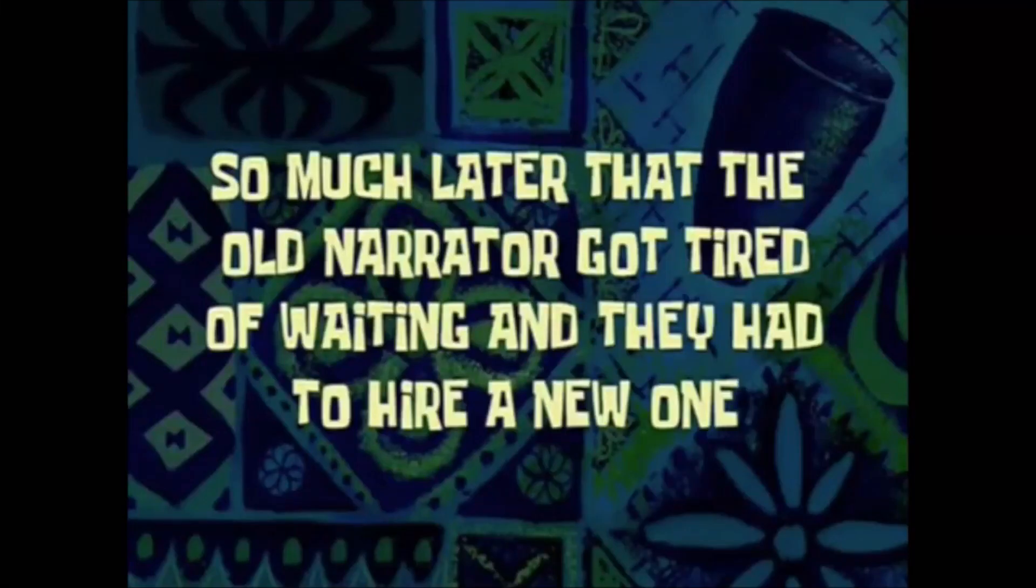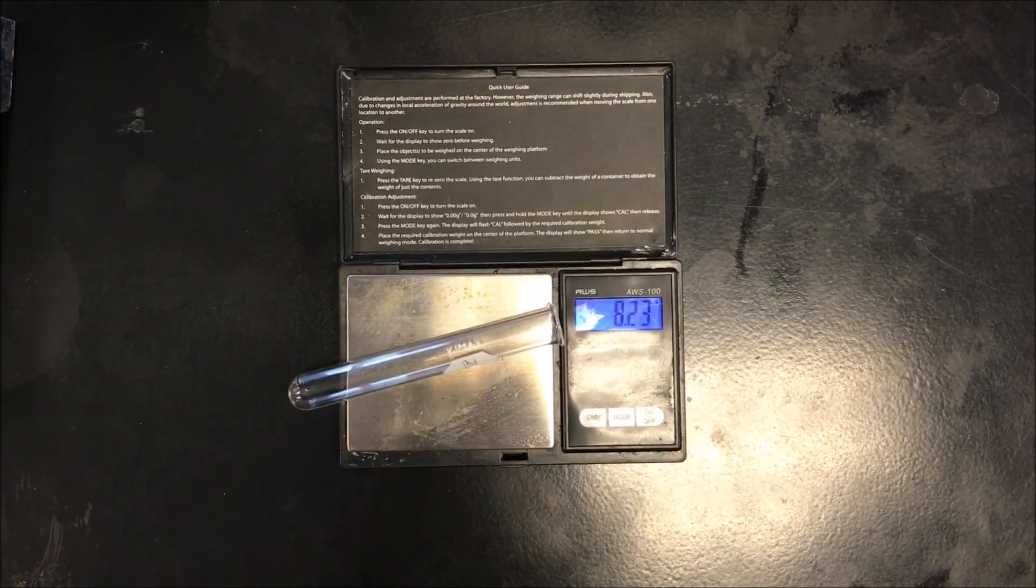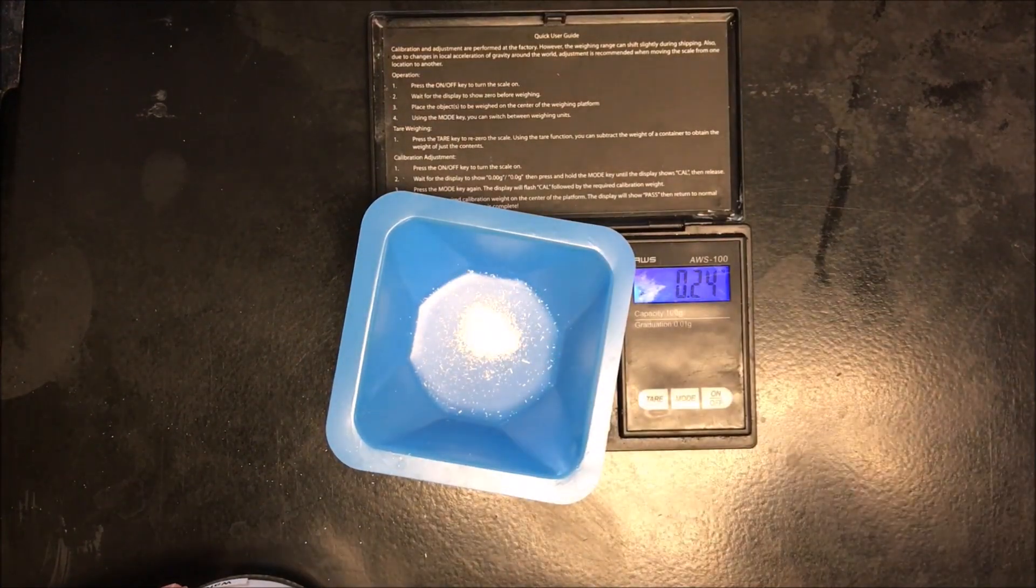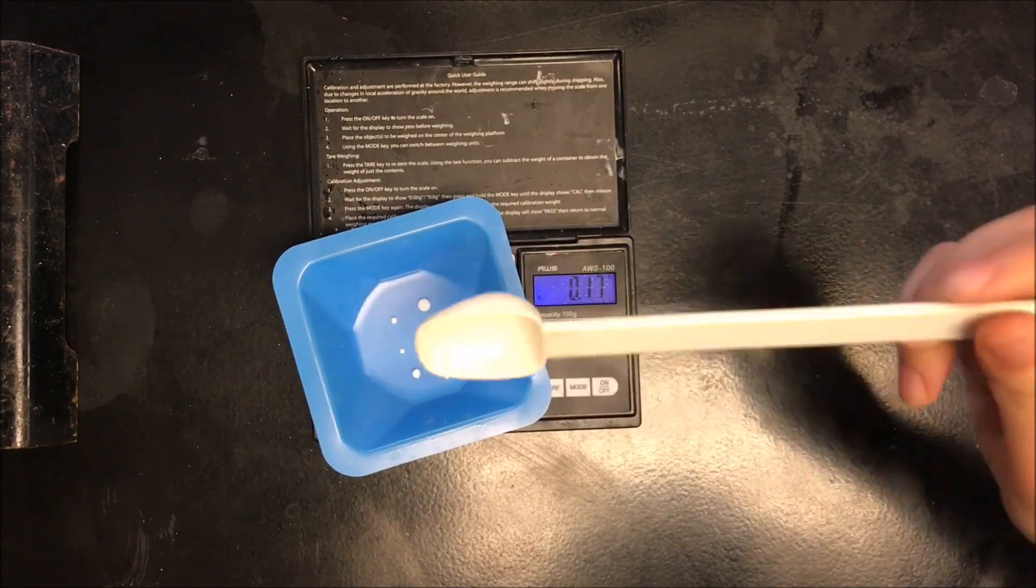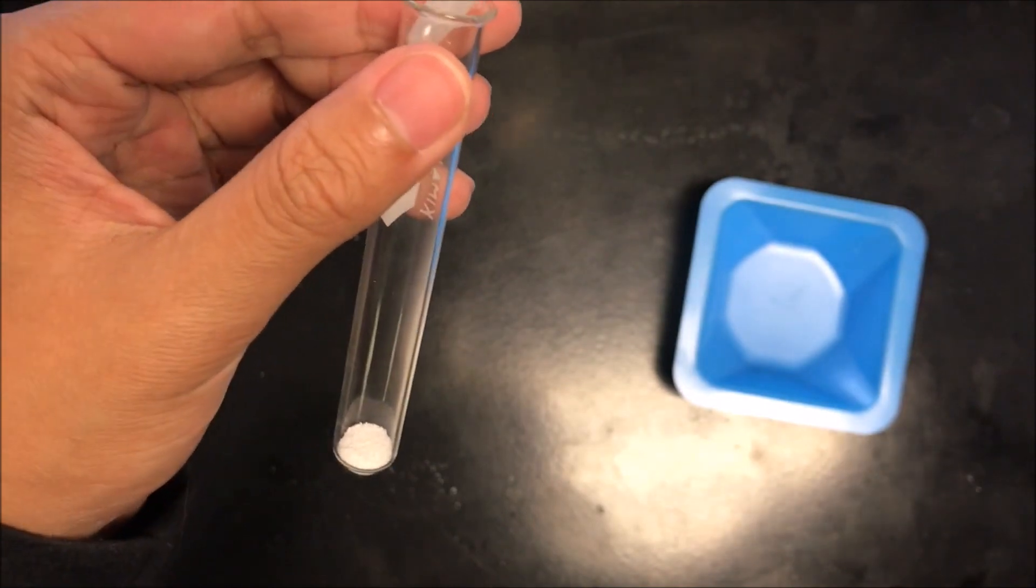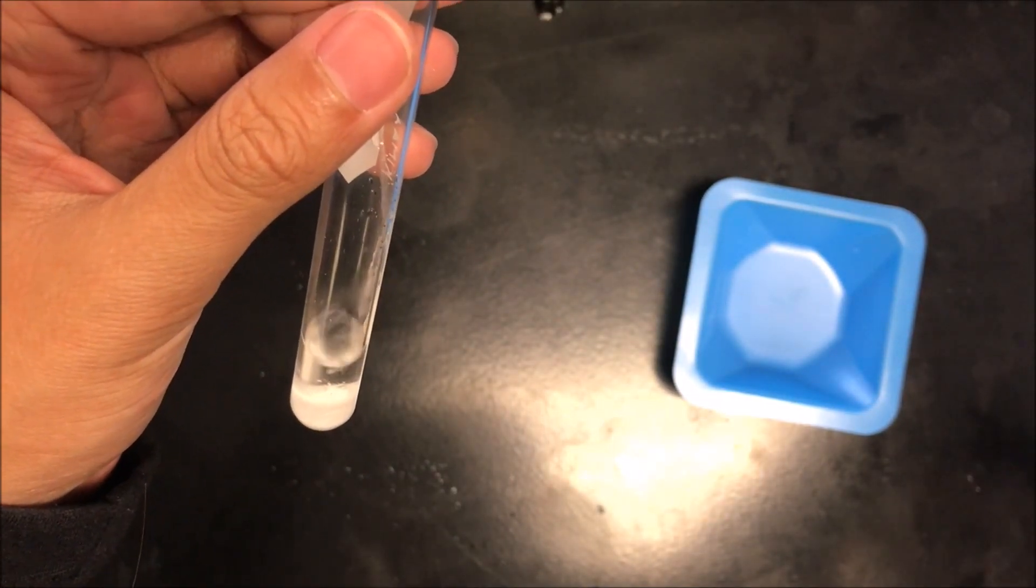So much later that the old narrator got tired of waiting and they had to hire a new one. Get two test tubes and record the mass of one of them. Measure about 0.25 grams of sodium carbonate and record this mass. Now measure about 0.2 grams of the unknown calcium halide. Add your measured out calcium halide to one of the test tubes. You can use a funnel to ensure that none of your sample spills out by accident.